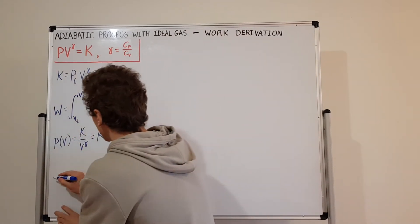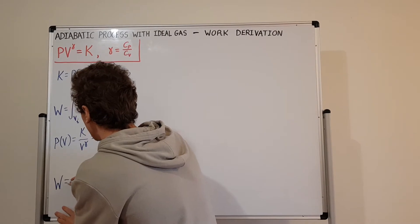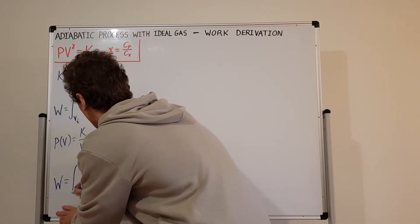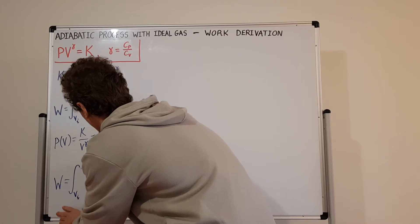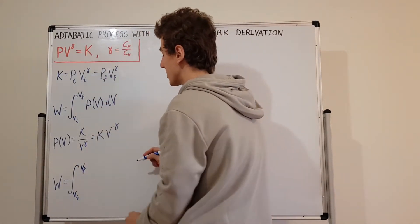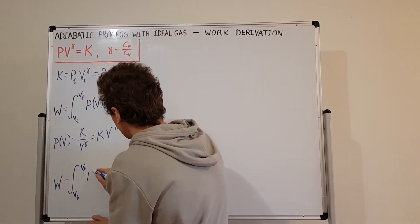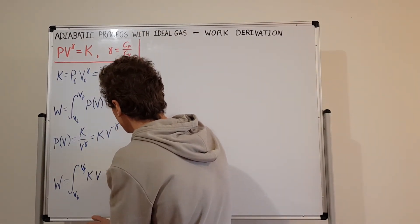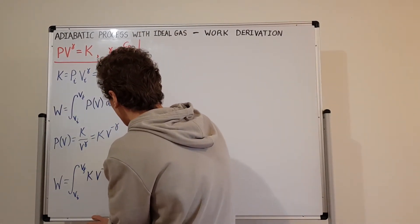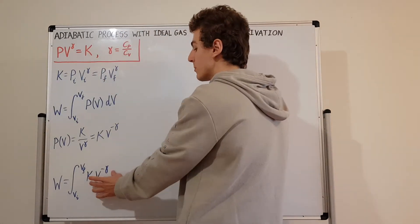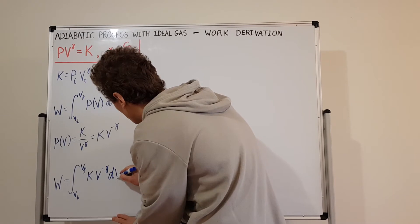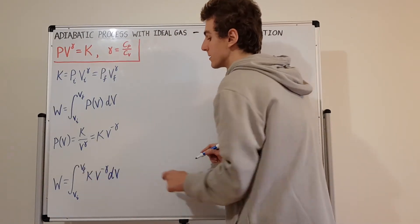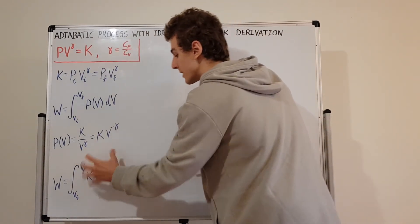We've got the integral from V-initial to V-final — those are the bounds of integration — of K times V to the minus gamma dV. I'll keep it in this form because it's easier to integrate. Now let's evaluate this integral.